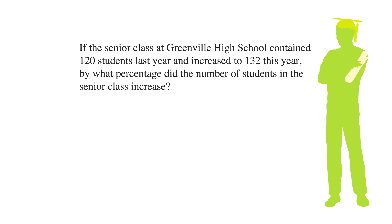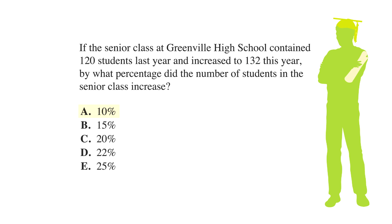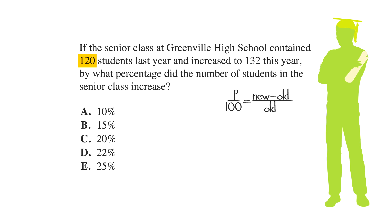If the senior class at Greenville High School contained 120 students last year and increased to 132 this year, by what percentage did the number of students in the senior class increase? The answer choices are A) 10%, B) 15%, C) 20%, D) 22%, and E) 25%. We'll use the formula p over 100 equals new minus old over old, where the new value is 132 and the old value is 120.